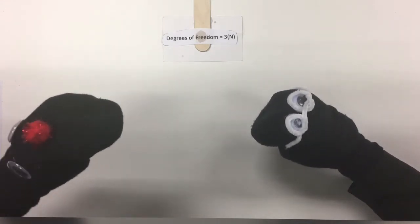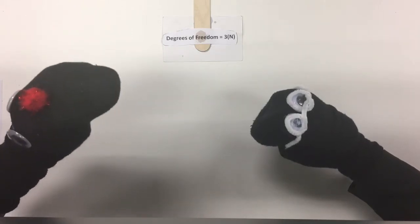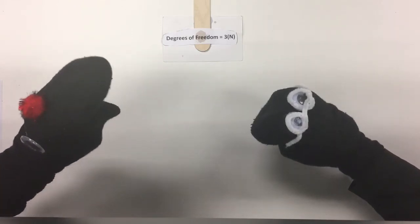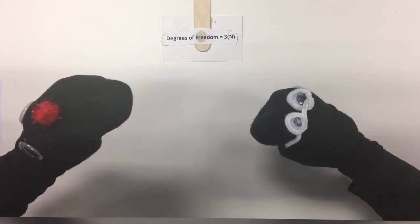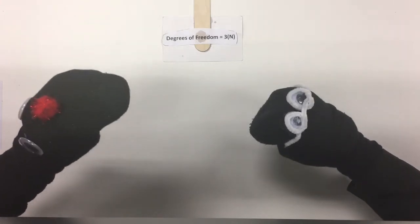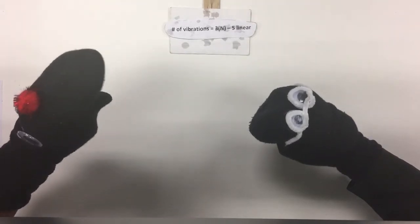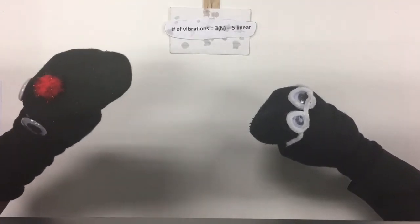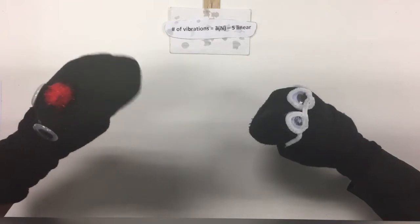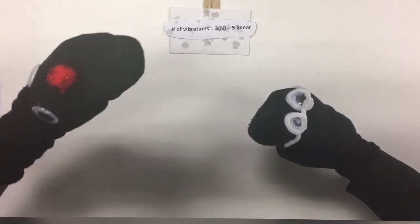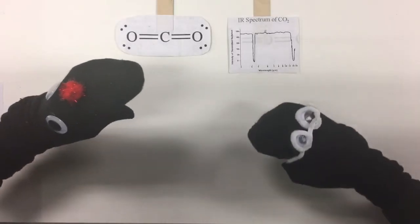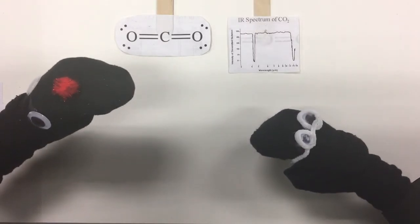Well, CO2 is a linear molecule, so we would use number of vibrations equals 3n minus 5, where n is the number of atoms, giving us four normal vibrational modes for CO2. So we could expect IR to detect four bands. Now let's look at an IR readout of CO2.